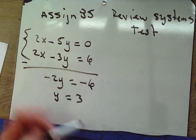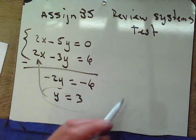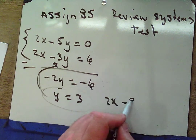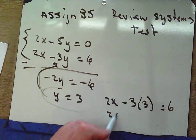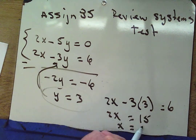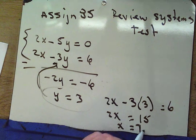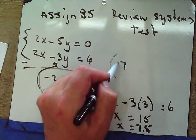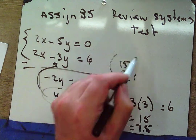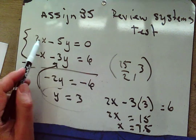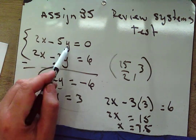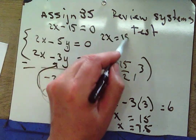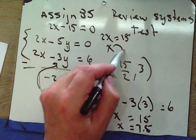We're not done — we need to plug y back in. So 2x minus 3 times 3 equals 6, giving us 2x equals 15, and x equals 15/2 or 7.5. We could also plug 3 into the first equation: 2x minus 15 equals 0, giving x equals 15/2 again.